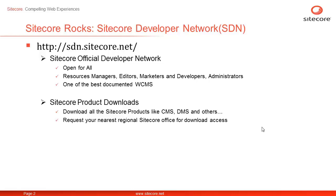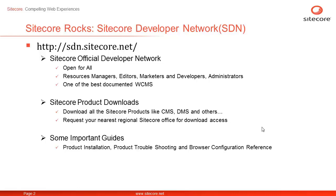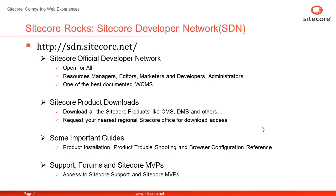In case you don't see the download tab or are unable to download, please contact your nearest regional Sitecore office for download privilege. We will look at some important documents to begin with Sitecore CEP such as Product Installation Guide, Product Troubleshooting Guide and Browser Configuration Guide. You will also find links to Sitecore Support, Forums and Sitecore MVPs.